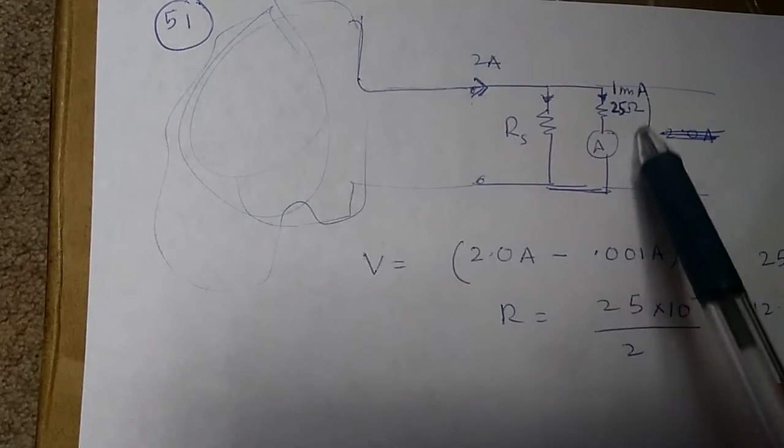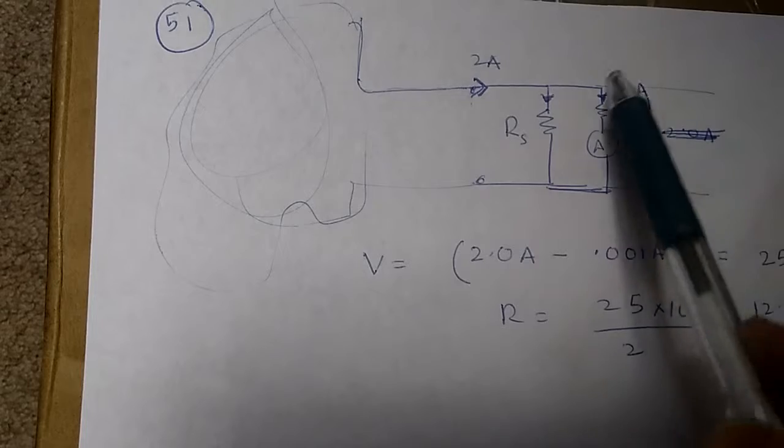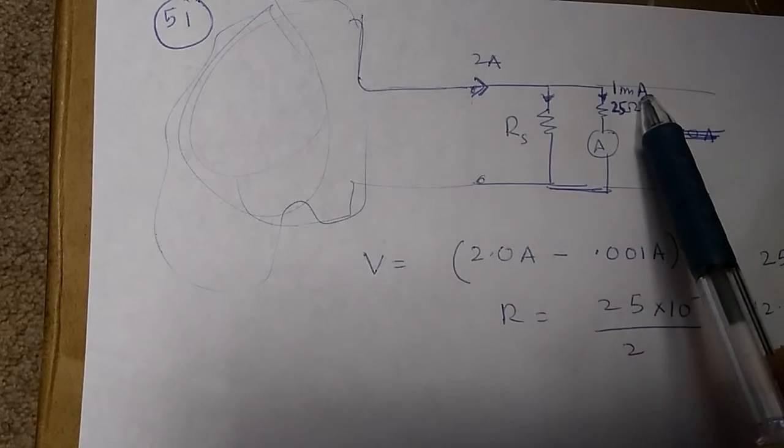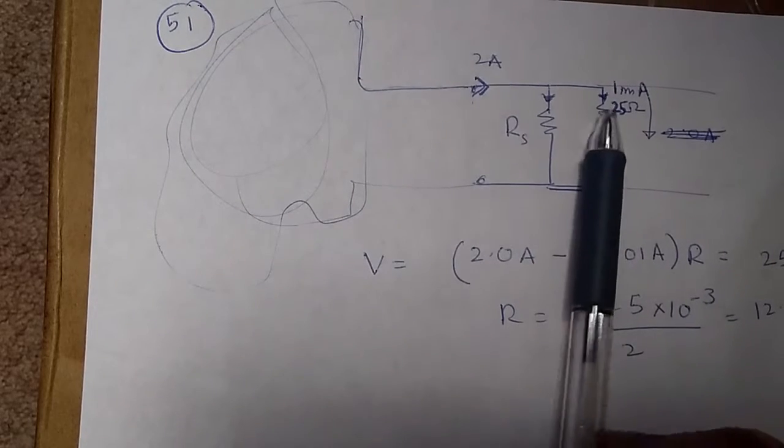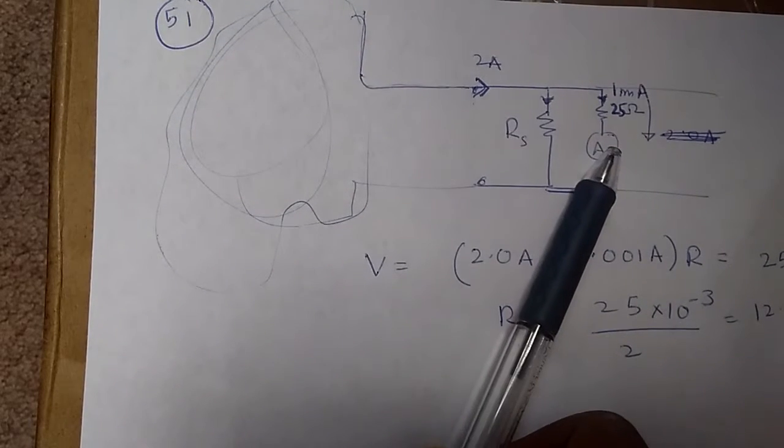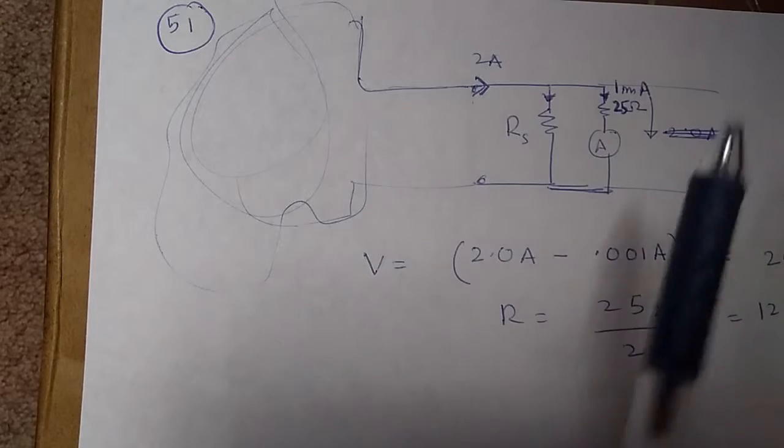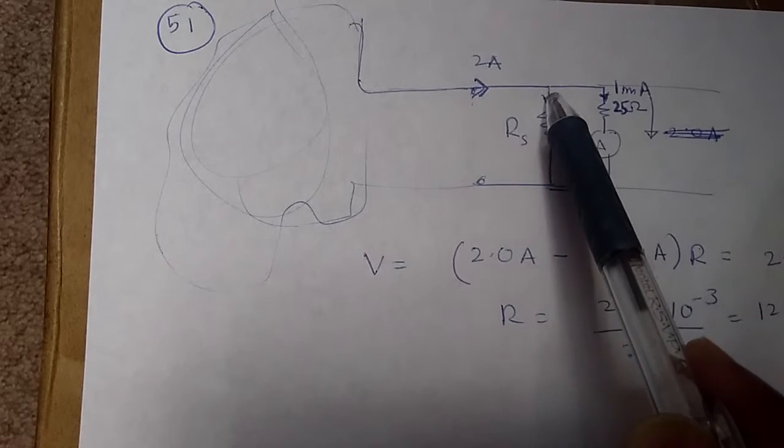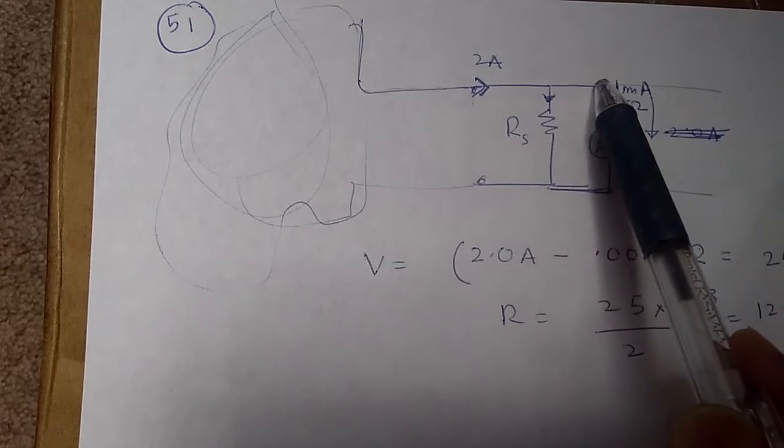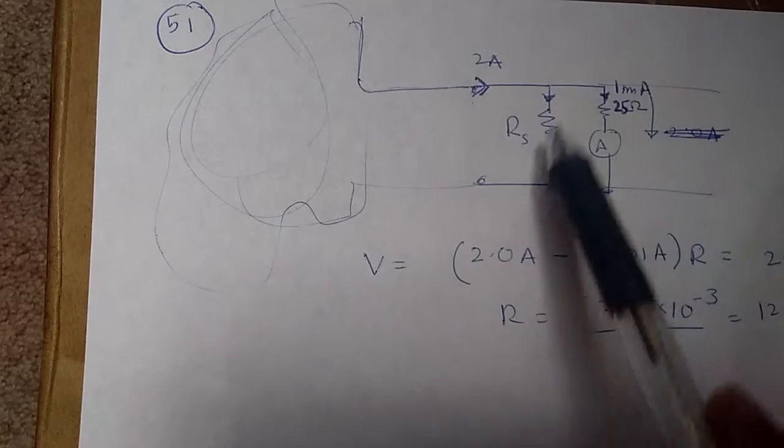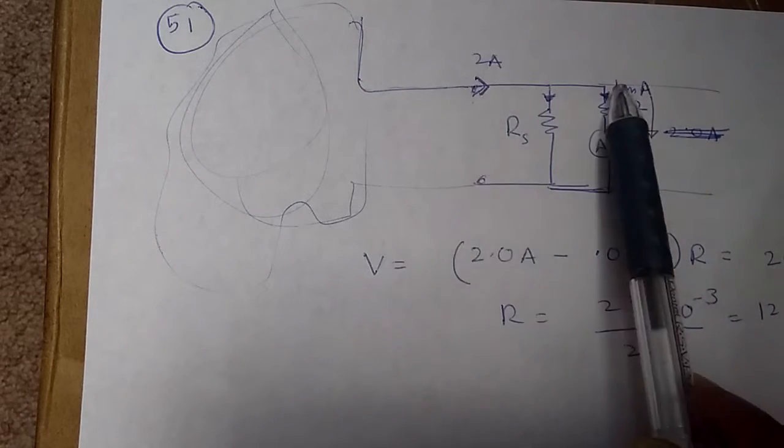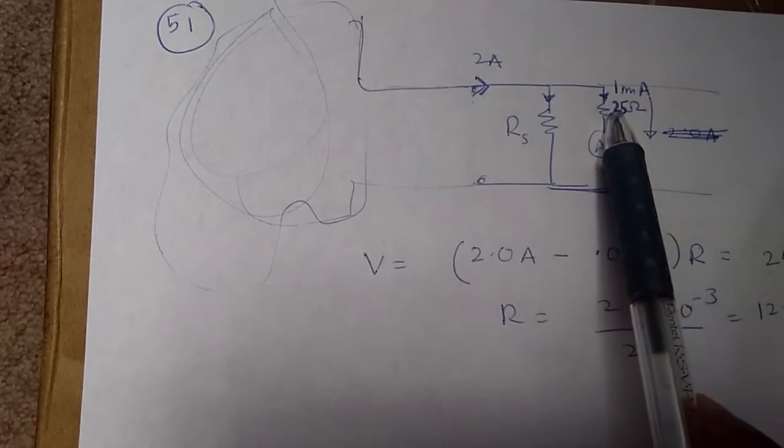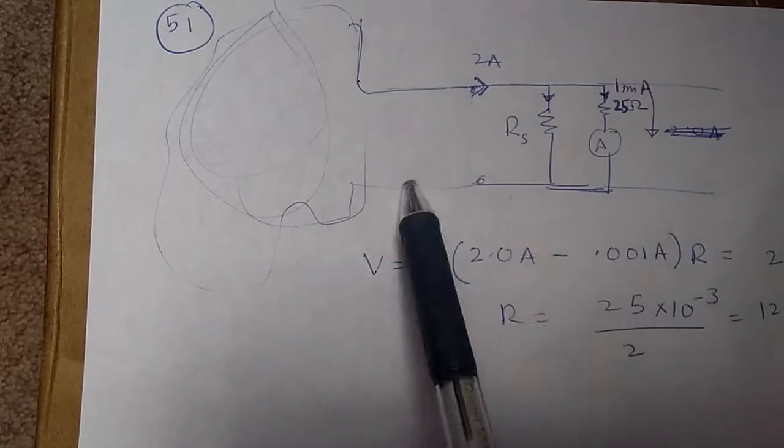Now our ammeter cannot take more than 1 mA of current, because if it takes more than 1 mA, it will go past its full scale. So what we do is use a shunt resistor here. A shunt resistor means a resistance in parallel to it. If we shunt it, we don't allow the current to flow mostly through the ammeter, we shunt it through here.